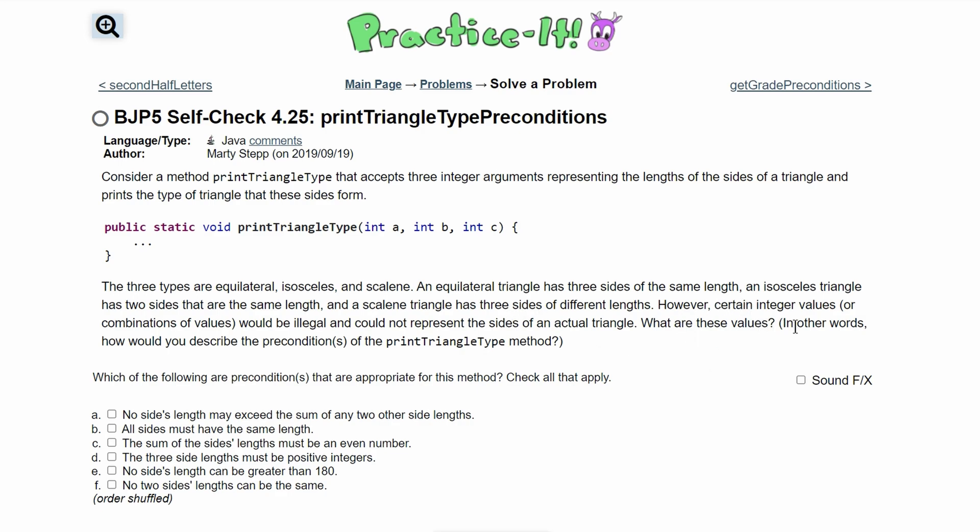However, certain integer values or combinations of values would be illegal and could not represent the sides of an actual triangle. We are asked what are these values? In other words, how would we describe the preconditions of the printTriangleType method?